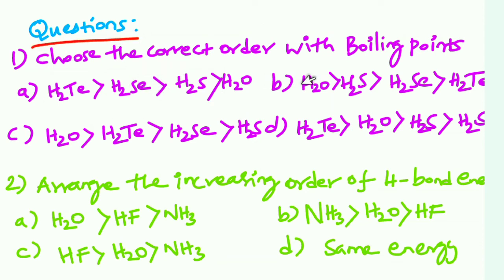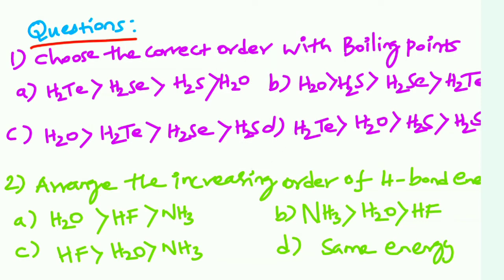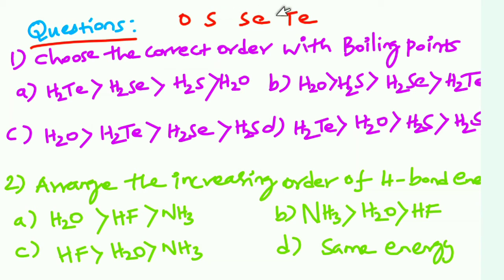Question solving. Choose the correct order of boiling points. Top to bottom in Group 16: oxygen, sulfur, selenium, tellurium. The boiling point is related to molecular mass. Going from top to bottom, molecular mass increases, so boiling point increases. The correct answer is: tellurium > selenium > sulfur > oxygen.